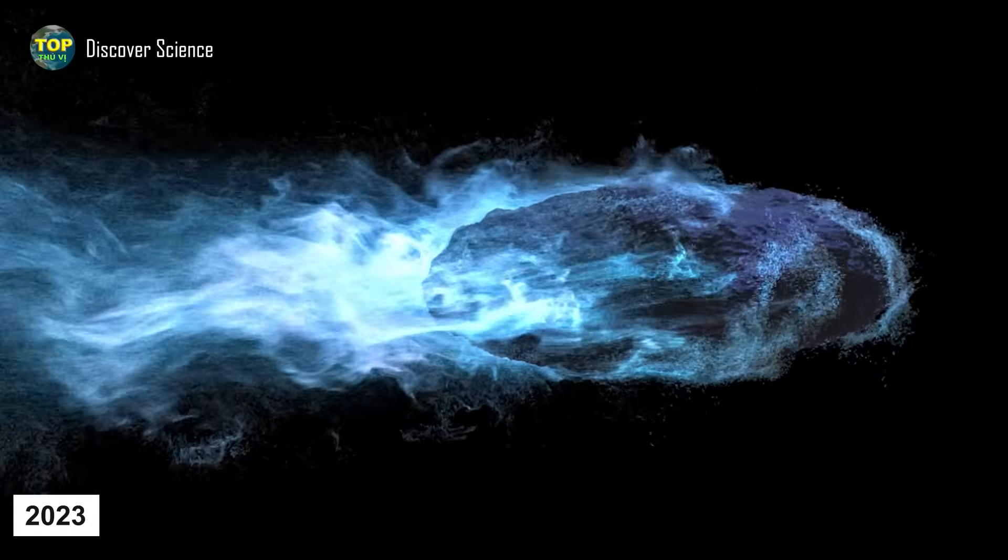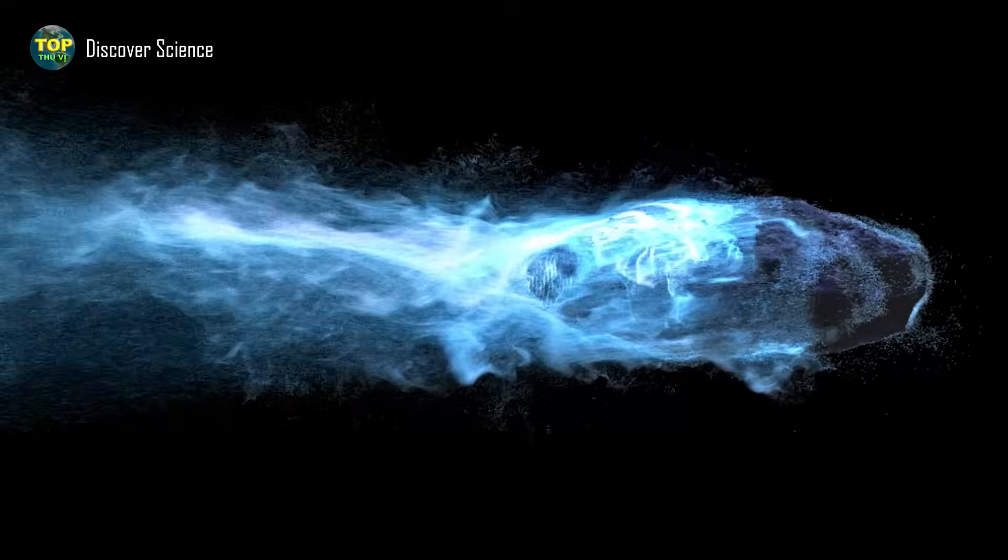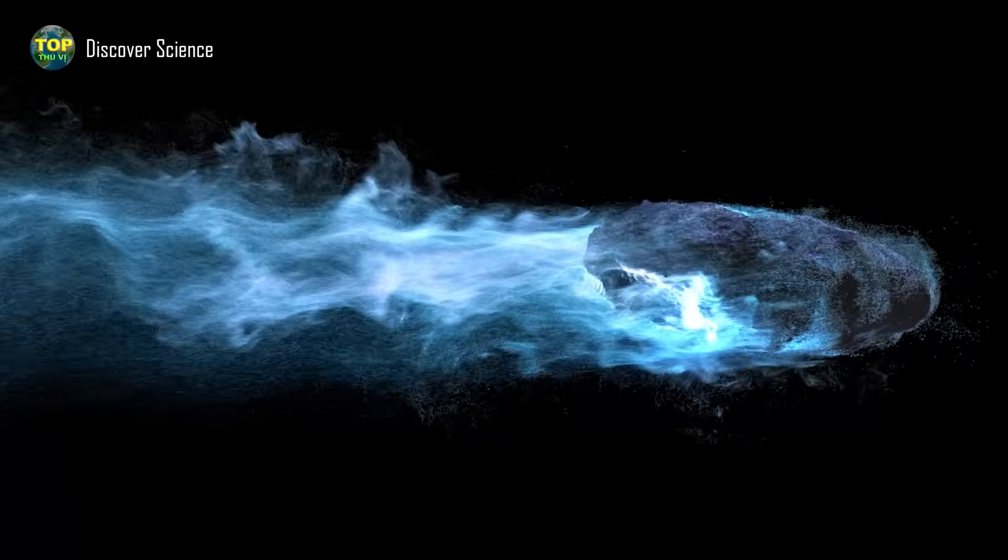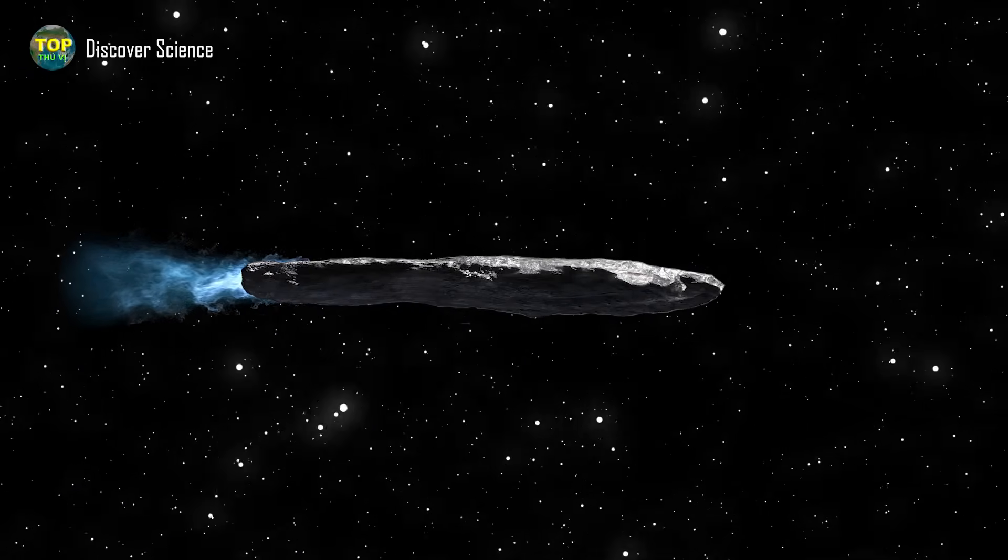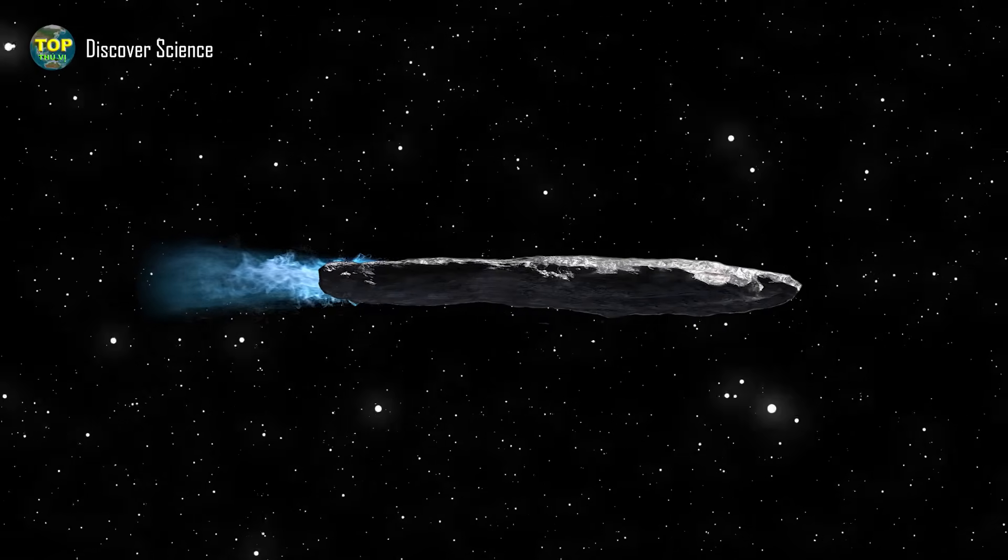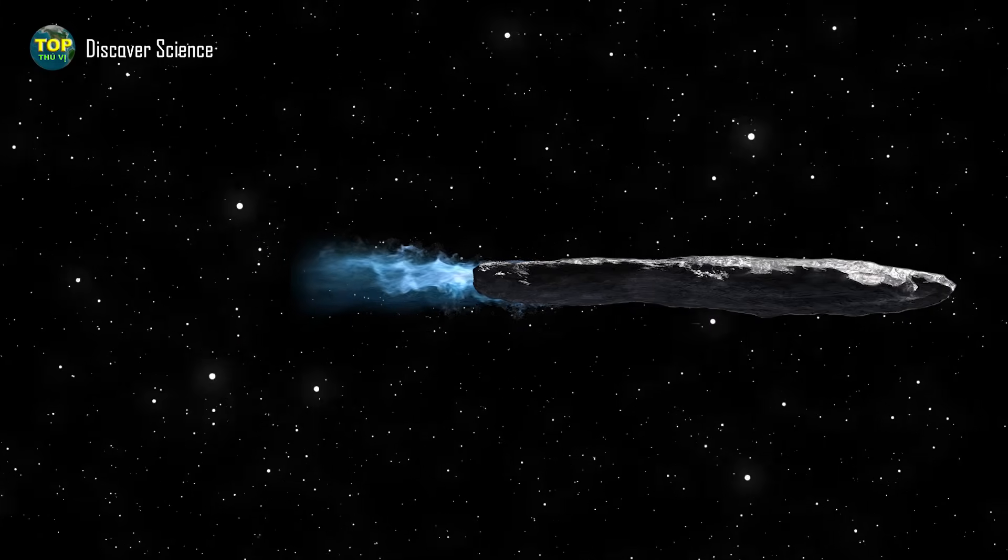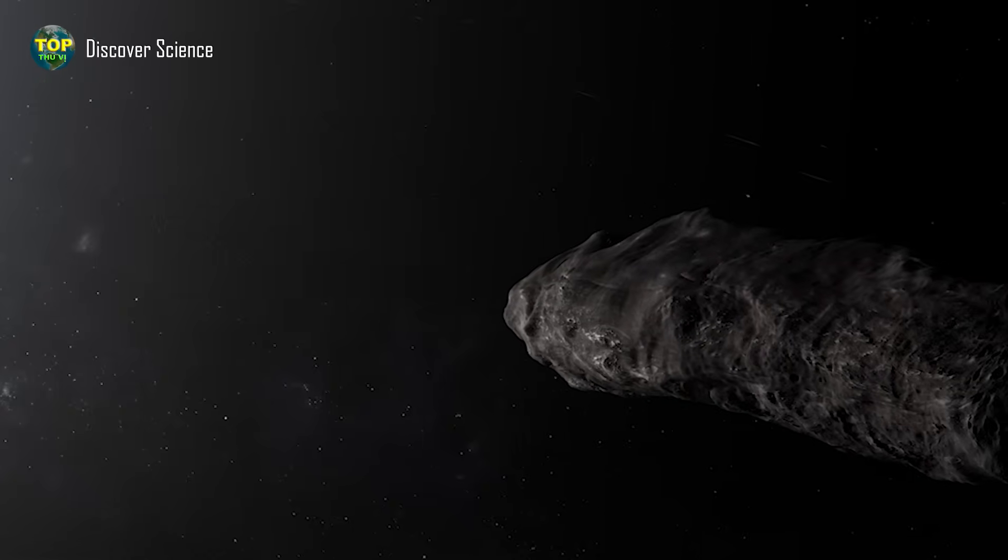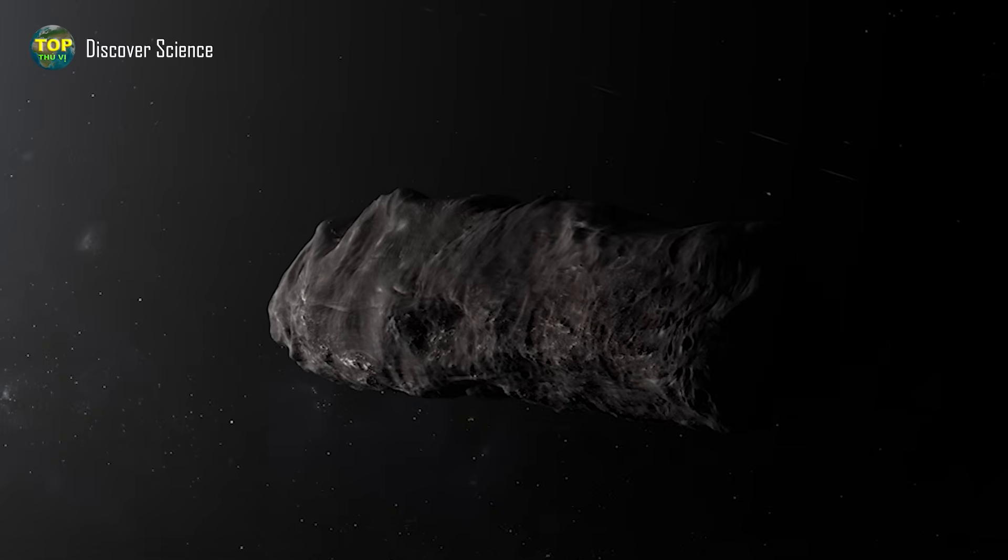A 2023 study backed by NASA suggests that 'Oumuamua might have released atomic hydrogen from within as it approached the sun. Hydrogen is very difficult to detect, but it could generate a small force sufficient to explain the acceleration without leaving any obvious traces. According to this theory, 'Oumuamua was formed as a comet—essentially, it is a space rock mixed with dust and water ice. Somehow, it was ejected from its original star system, traveling through interstellar space and accidentally entered the solar system.